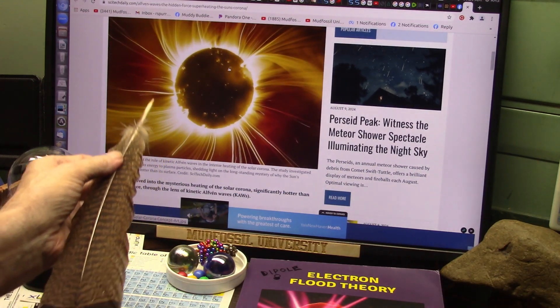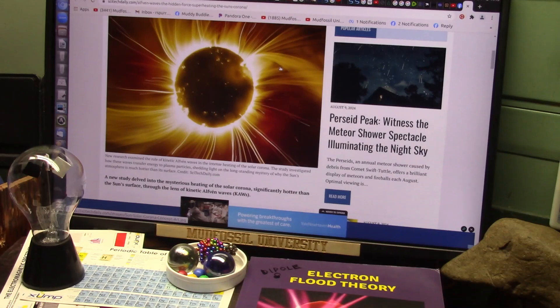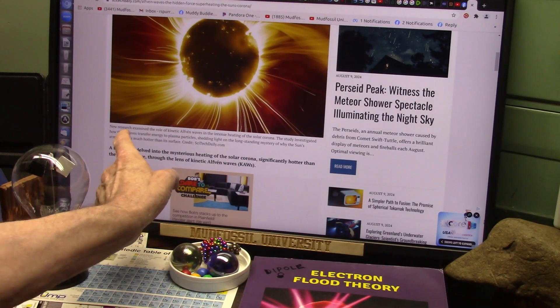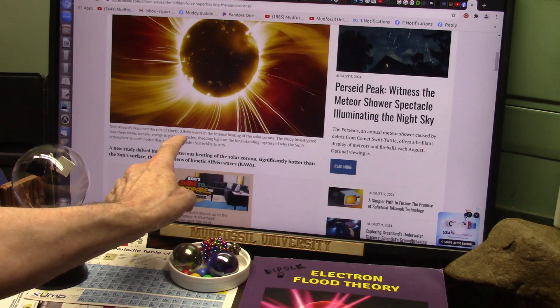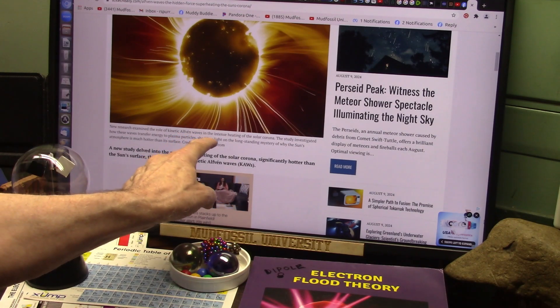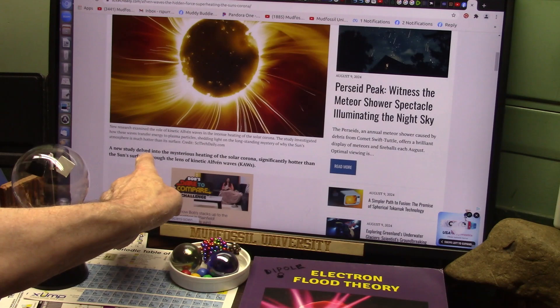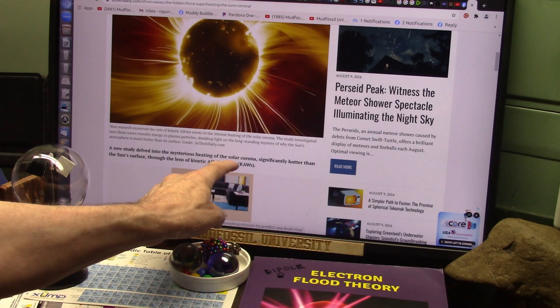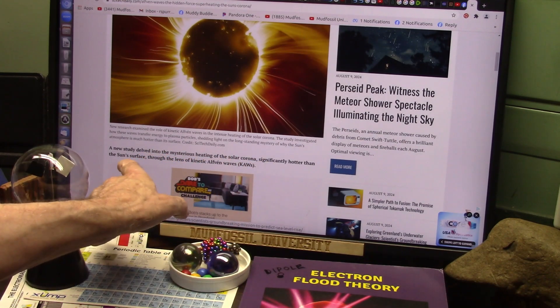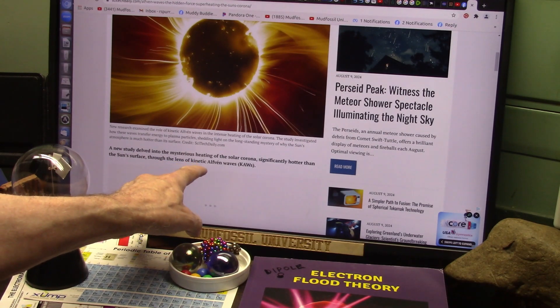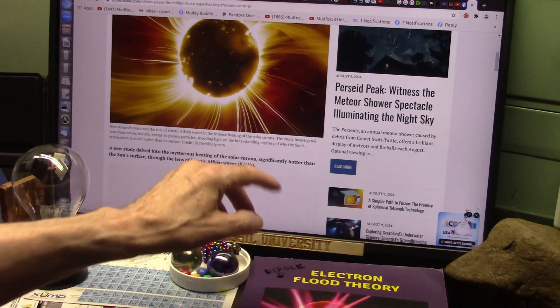I gotta look at this to see what these Alphavin waves are. Check this out: new research examined the role of these Alphavin waves in the intense heating of the solar corona. A new study delved into the mysterious heating of the solar corona, significantly hotter than the Sun's surface, through the lens of kinetic Alphavin waves.